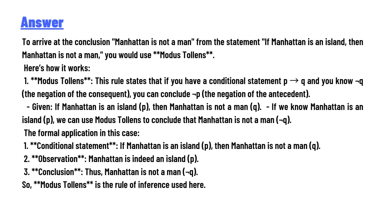Given: 'If Manhattan is an island (P), then Manhattan is not a man (Q).' If we know Manhattan is an island (P), we can use modus tollens to conclude that Manhattan is not a man (not Q). Additional statement: 'If Manhattan is an island (P), then Manhattan is not a man (Q).' Observation: Manhattan is indeed an island. Conclusion: Manhattan is not a man (not Q). So modus tollens is the rule of inference used here — that is the correct answer.